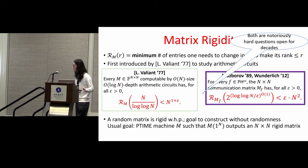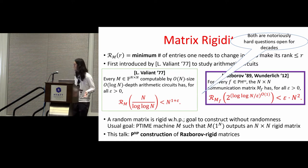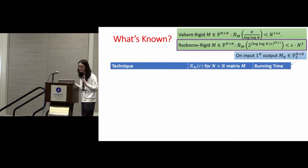We know a random matrix is rigid with high probability, but that's not very interesting because we also know random functions are hard. So the goal here is to construct them without randomness. Then we will have explicit functions which are hard for both cases, and they will imply breakthrough lower bounds. The usual goal is to find a polynomial time machine M such that it will output a family of rigid matrices. We almost achieve this for Razborov rigid matrices, but with an NP oracle. Nonetheless, this is still the first non-trivial construction of Razborov rigid matrices, and we have a few lower bounds for it I will talk about later.